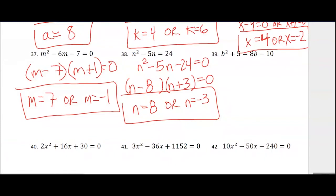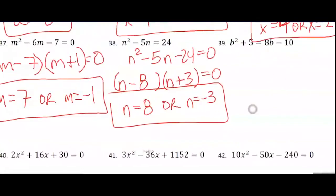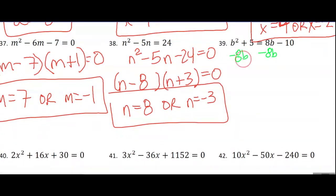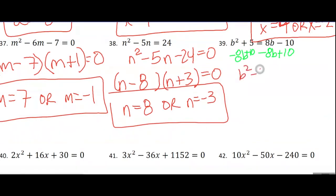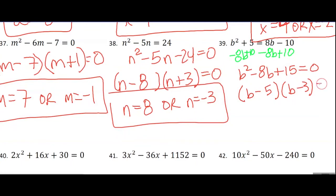Number 39, we need to move some terms around. Subtract the 8b from both sides and add 10 to both sides, giving b squared minus 8b plus 15 equals 0. Two numbers that multiply to give 15 but whose sum is negative 8 are negative 5 and negative 3. So my solutions are b equals 5 or b equals 3.